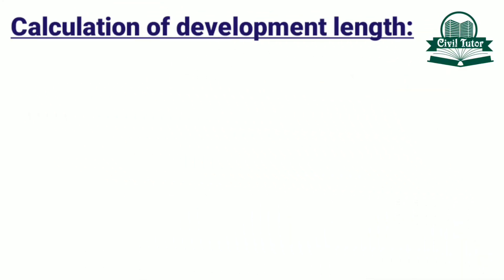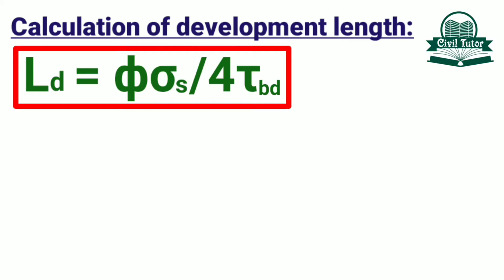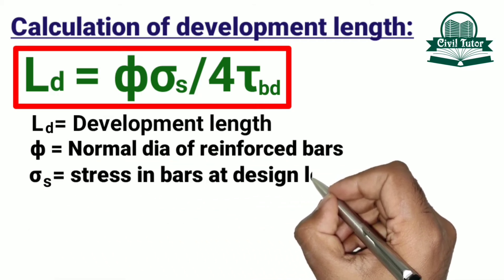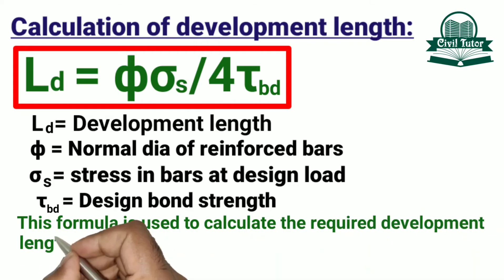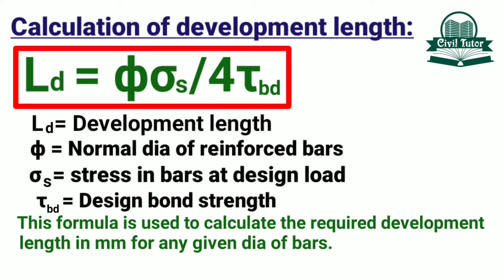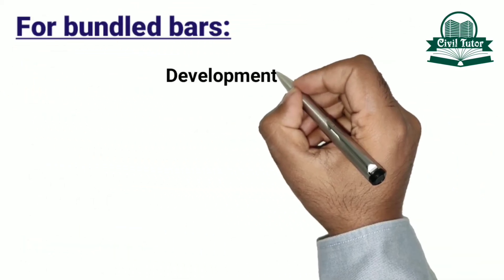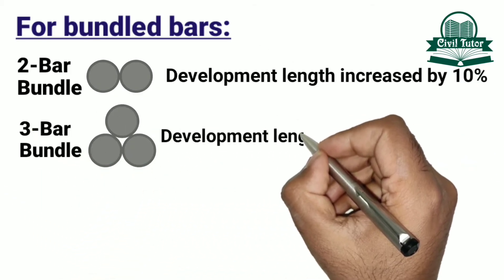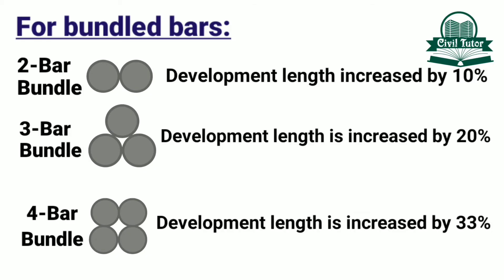For the calculation of development length, a formula is used to calculate the required development length in millimetres for any given diameter of bars. It is used for both the limit state method and the working state method. For bundled bars, the development length is increased by 10% if 2 bars are bundled together. In case of 3 bars, the development length is increased by 20%, and similarly when 4 bars are bundled together, the development length is increased by 33%.